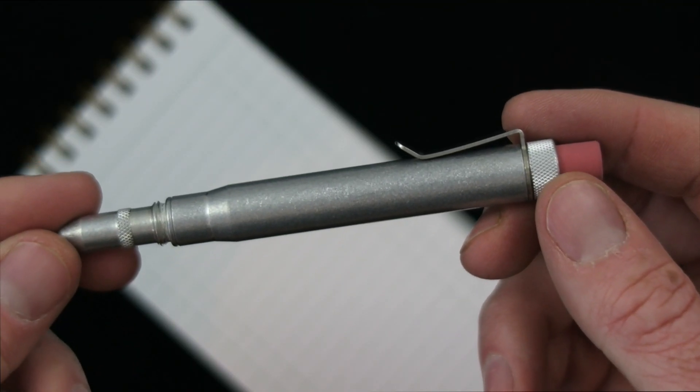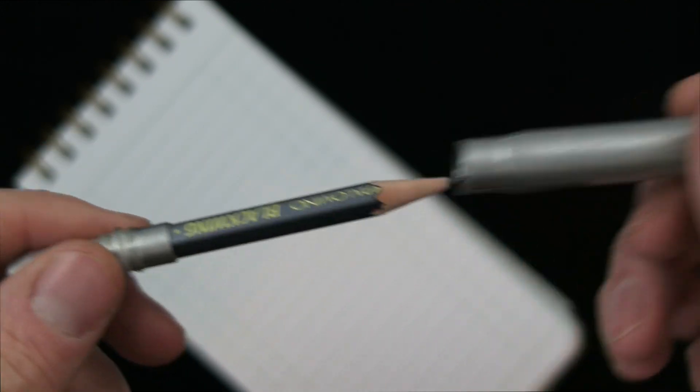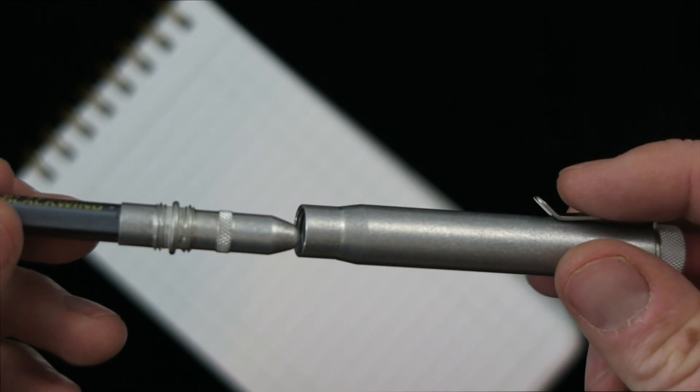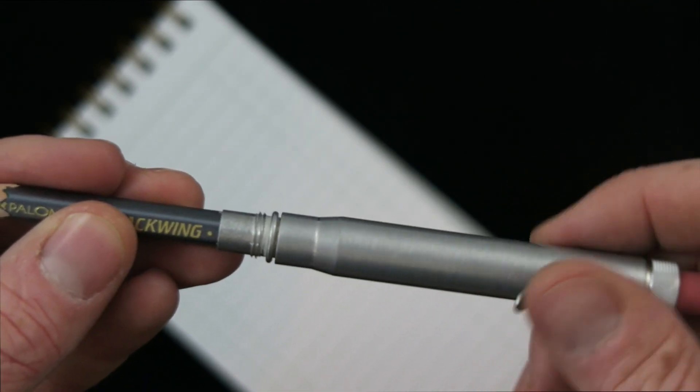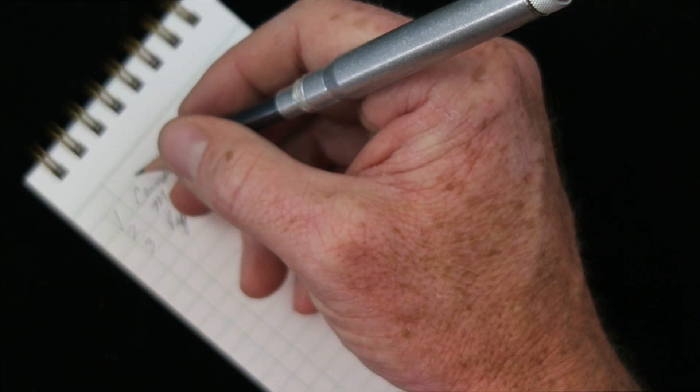So when you get ready to use it, simply screw out the bullet end, which houses the pencil, insert the bullet into the body, and screw it in. That puts you into a writing configuration, and you're ready to go to work.